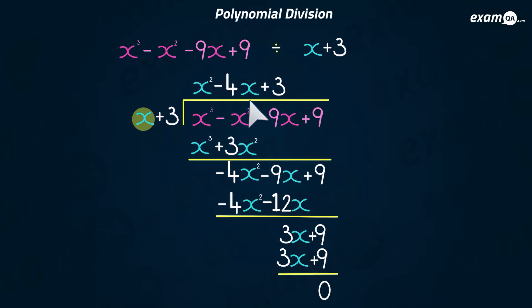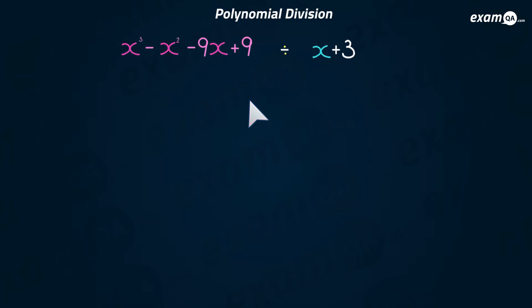We've done our first division. If you're doing this for the first time, please watch it repetitively — maybe three to five times before we carry on. So remember, we just answered this question and the answer was x squared minus four x plus three.